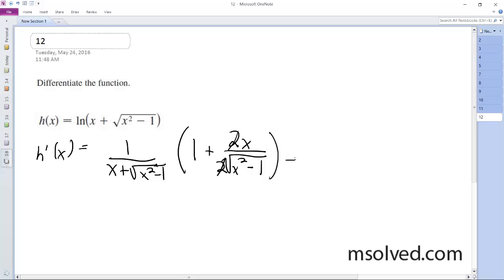and what we end up with here is 1 over x plus square root of x squared minus 1 times square root of x squared minus 1 plus x over the square root of x squared minus 1, which simplifies down to 1 over square root of x squared minus 1.